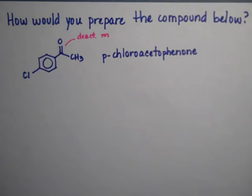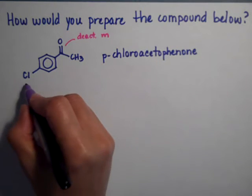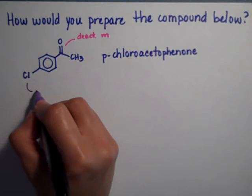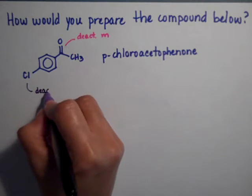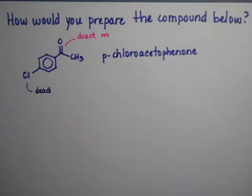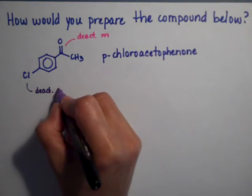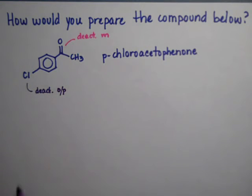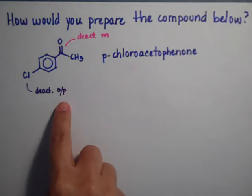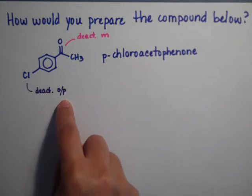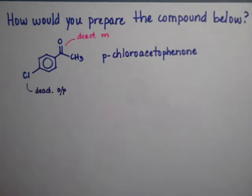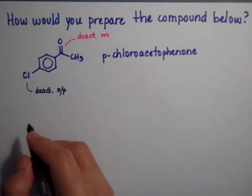The chloro, on the other hand, is a deactivator but it's one of the exceptions to the rule of deactivators. The halides are deactivators but they're ortho-para directors. So in this particular case the chloride could have been on the ring before we put the carbonyl on.